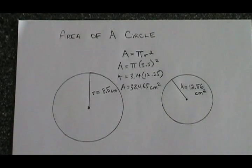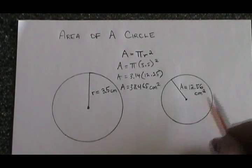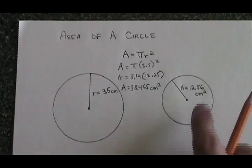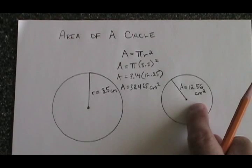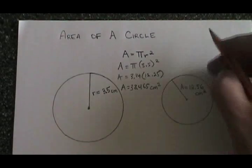Another way of using the area formula is when you're given the area and you want to know the length of the radius. That's the case with this smaller circle. The area is 12.56 centimeters squared.